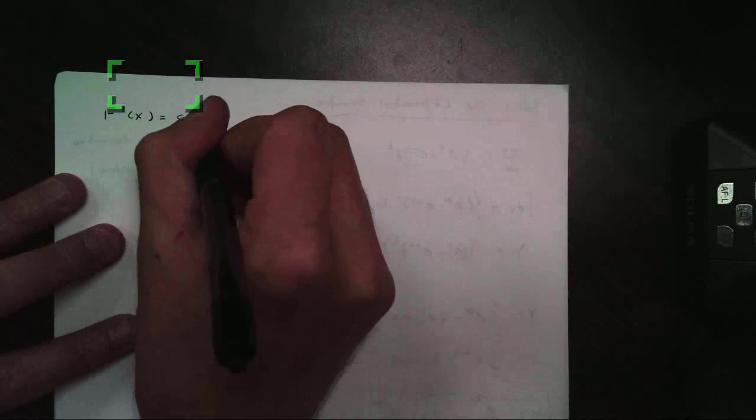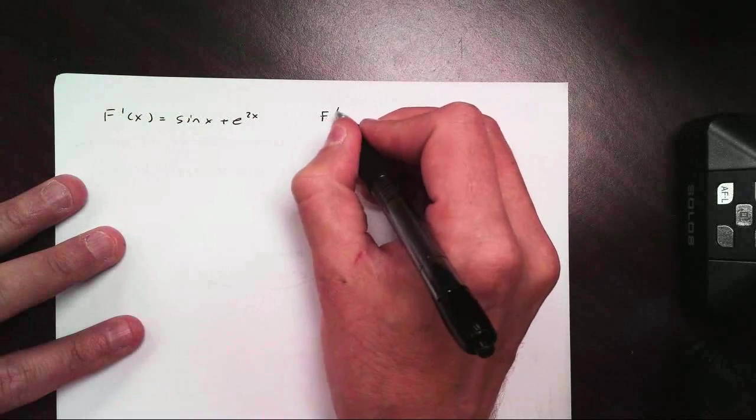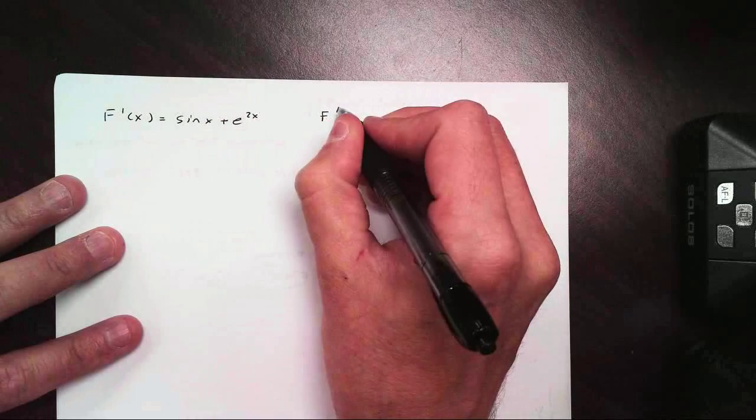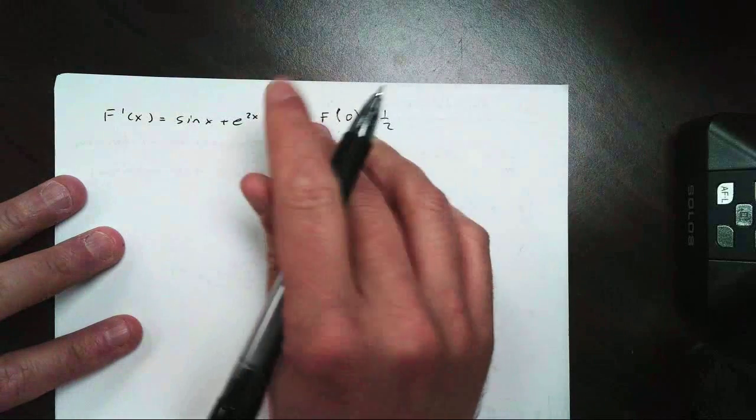Let's let f of x, or f prime of x, equal sine of x plus e to the 2x. And we're told that f of 0 equals 1 half. Now, we've seen this before.